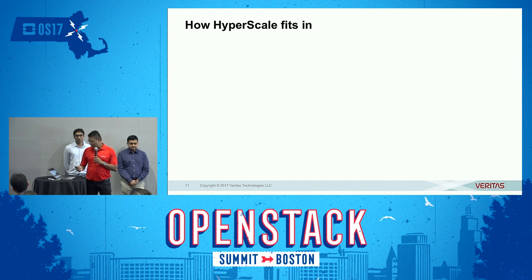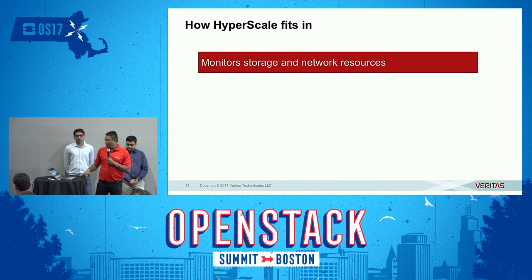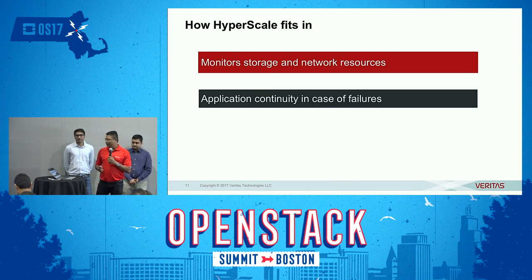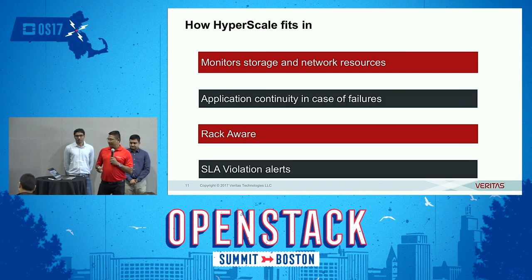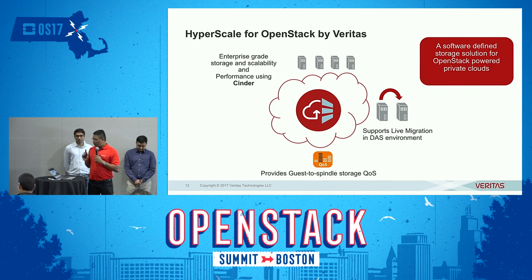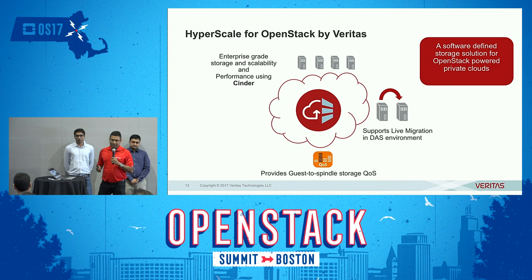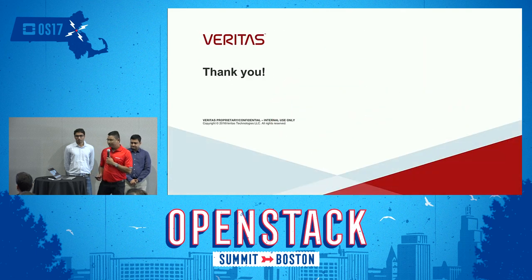For DR, Hyperscale provides alerts and resiliency handling for storage and network resource failures. Whenever there is a storage error or network resource outage, it raises alerts and handles those errors. It provides application continuity in case of storage failures and compute node failures, with rack-resilient workload deployment that fails over to another rack. It also provides real-time SLA violation alerts. Looking at the history: Hyperscale was introduced at the Austin summit for OpenStack, VM residual IOPS-based provisioning was introduced at Barcelona, and now we have introduced intelligent resource monitoring for Hyperscale.